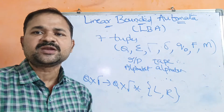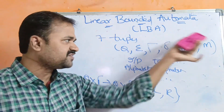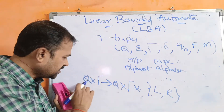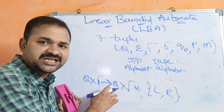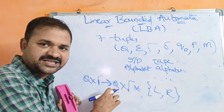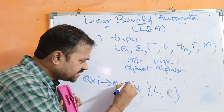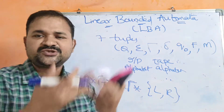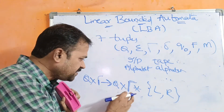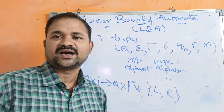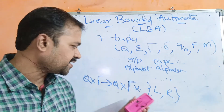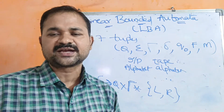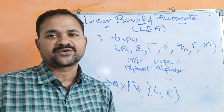We define linear bounded automata using seven tuples: Q, Σ, Γ, δ, q₀, F, and M. Where Q means set of states, Σ means input alphabet, and Γ means tape alphabet.